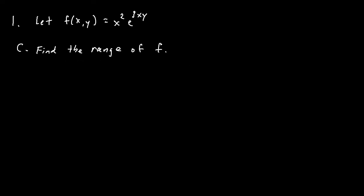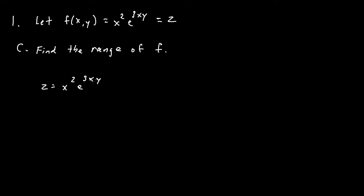For part C, we find the range. We set z equal to x squared times e to the 3xy, since z is the output. Since e to the x is always above zero, no matter what we plug in for x and y, we'll never get a value less than zero. So the range in bracket notation is from 0 to infinity.